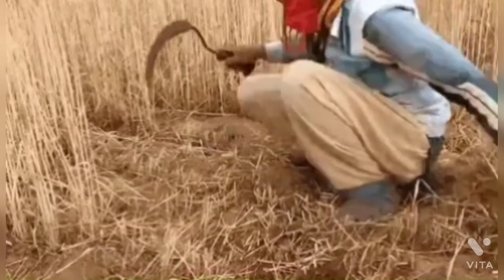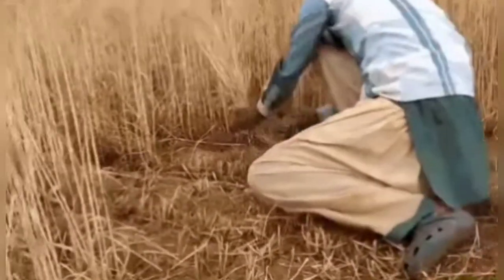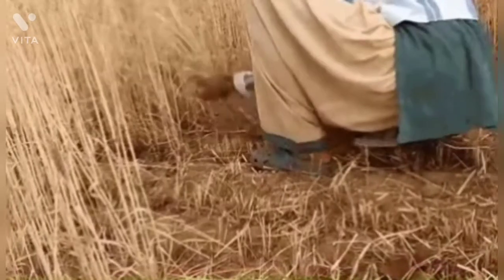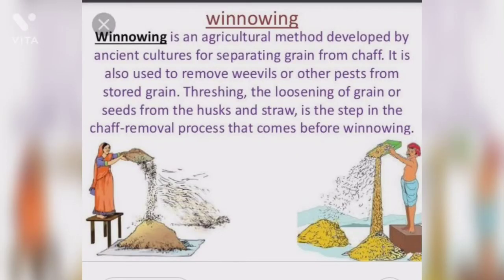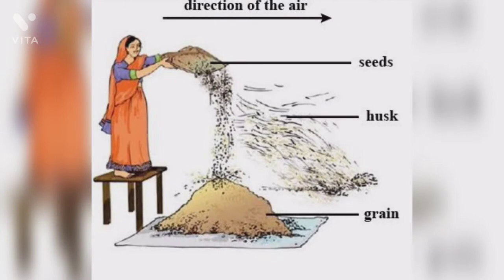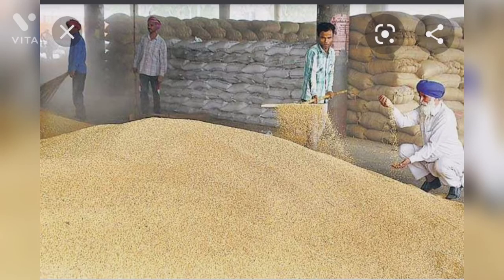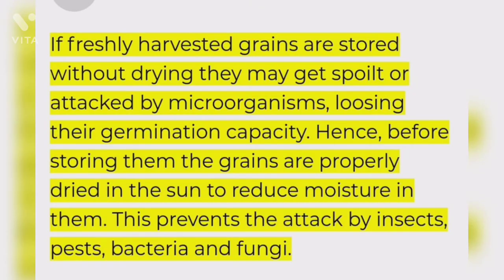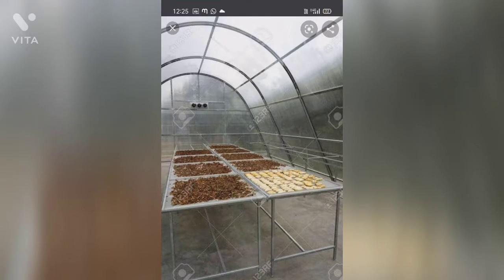The grains separated by the above method need to be winnowed. Winnowing helps in the separation of grains from the husk. Once the grains are ready, we need to store them. The next step is storage. Proper storage of food grains is necessary to get a regular supply of food products throughout the year, as it protects the food grains and other agricultural products from pests, rodents, and other microbes.